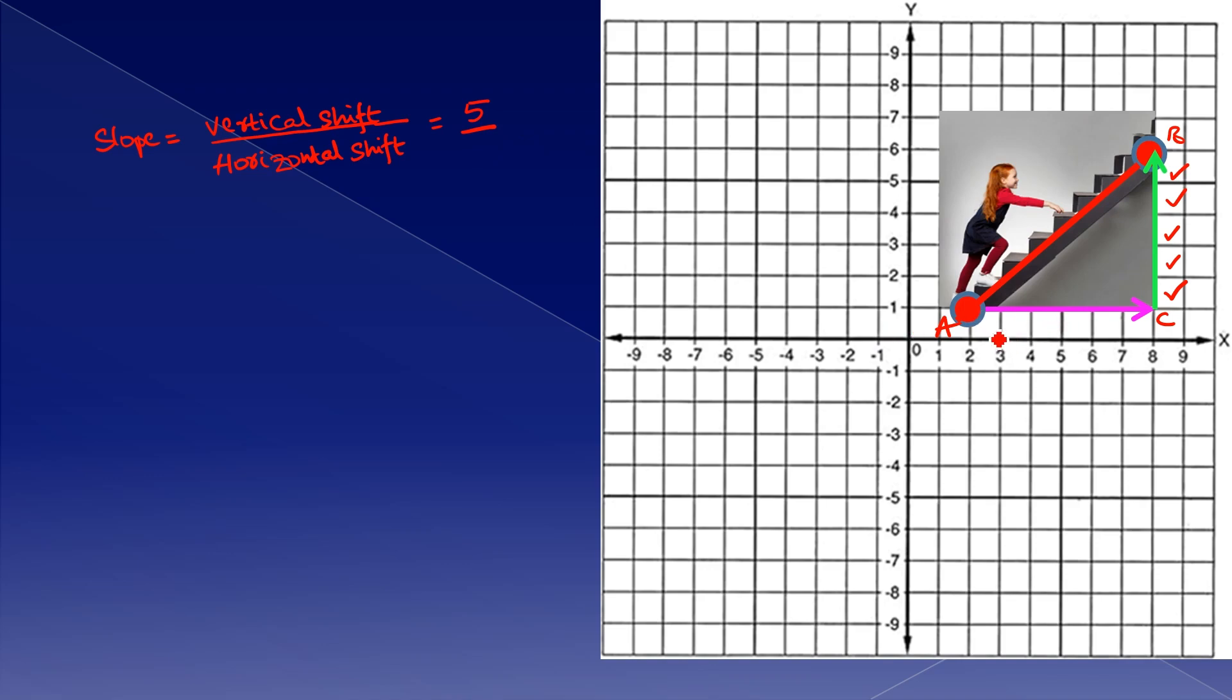And the horizontal shift, how many units of horizontal shift did she move? 1, 2, 3, 4, 5, and 6. 6 units.